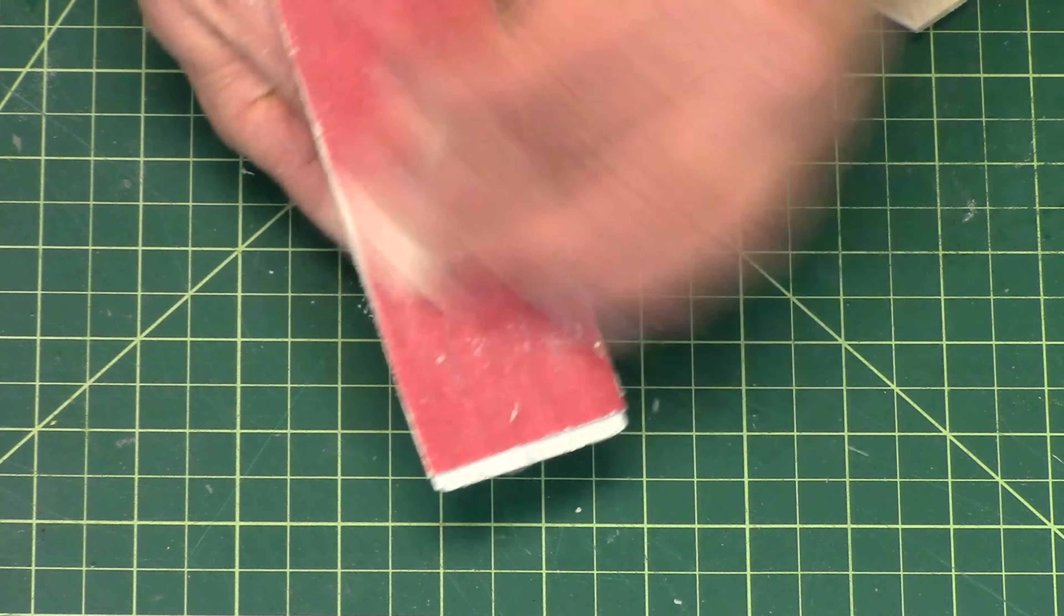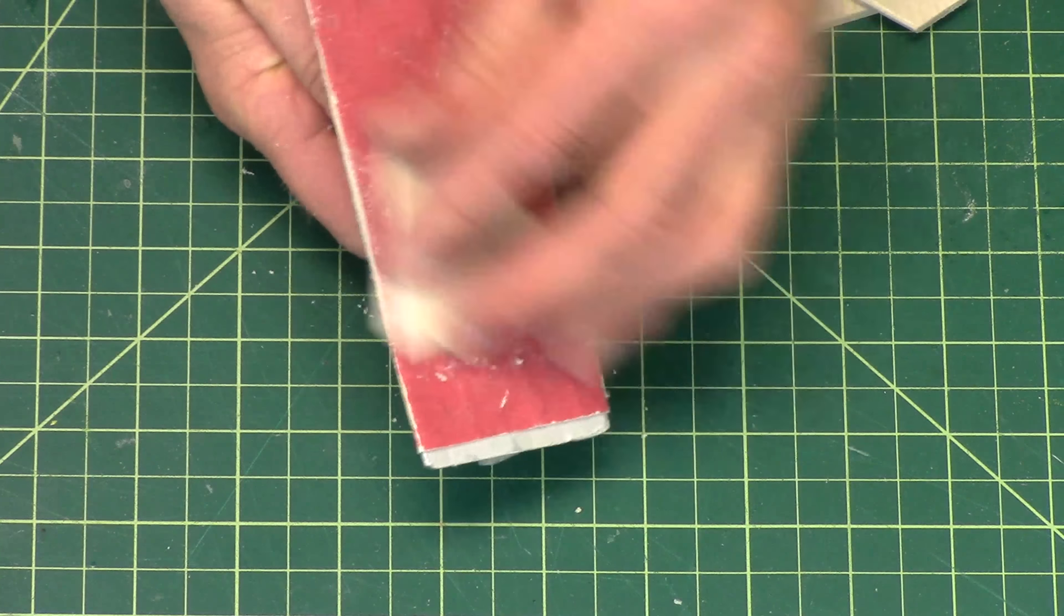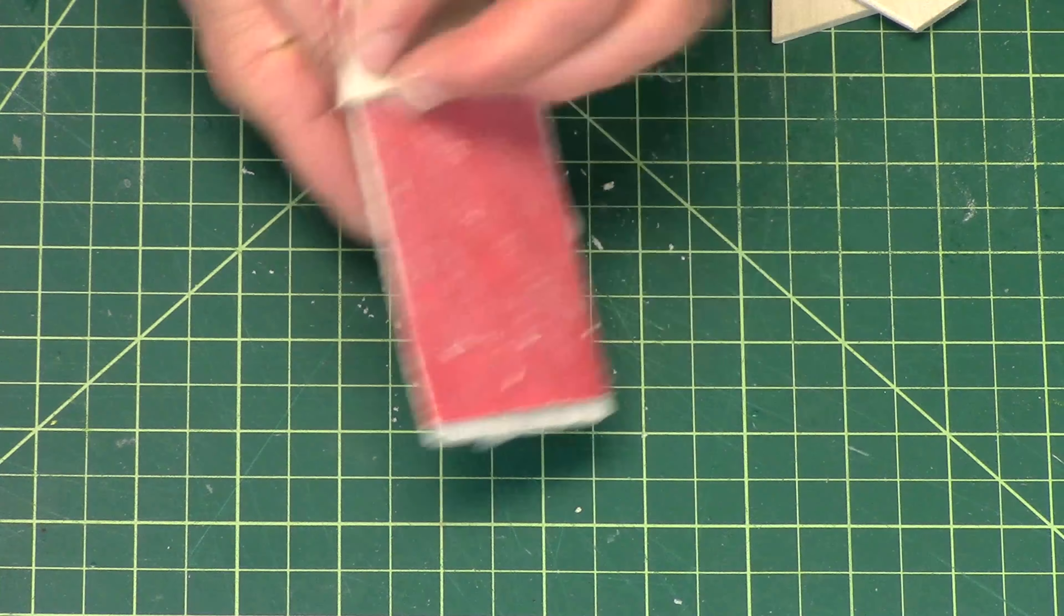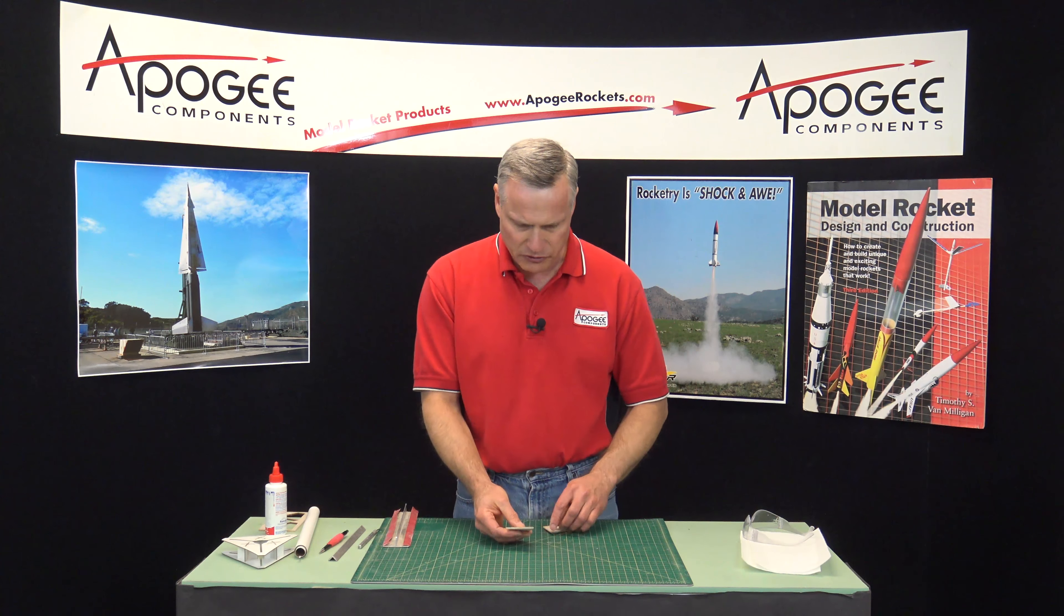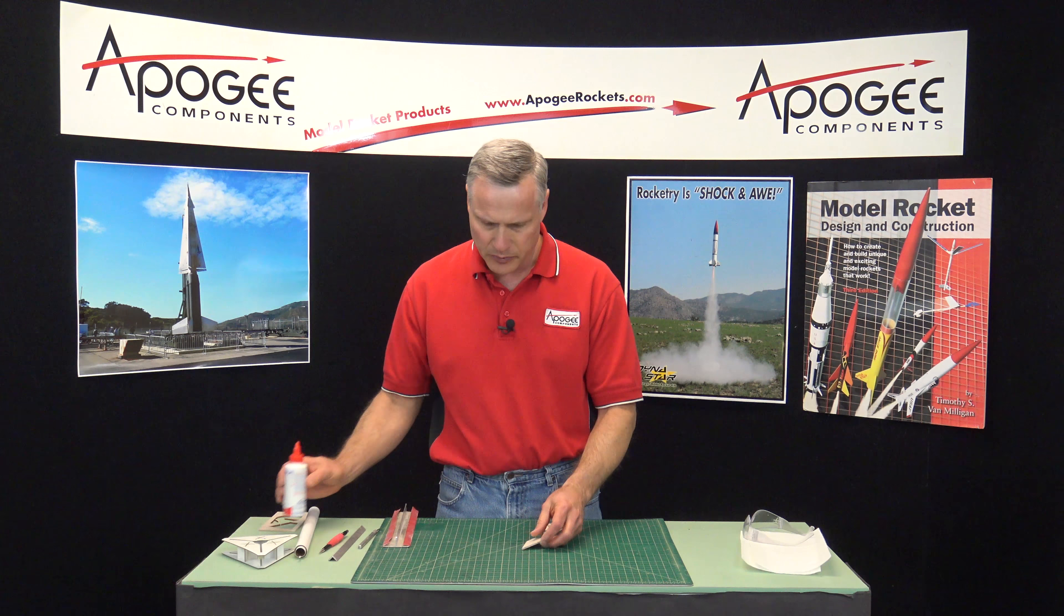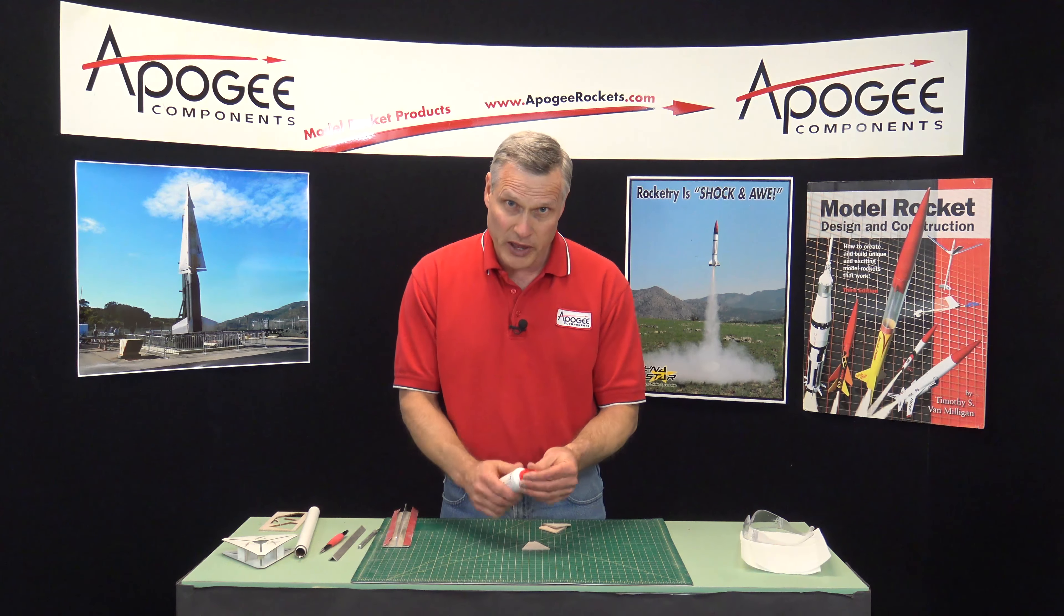I also like to sand the surface of the fins. I'll just put it on the sandpaper and just do it in a circular motion. And this makes it a little bit smoother. Again, this is going to reduce the drag and allow the rocket to fly higher. Okay, so all the fins are sanded.